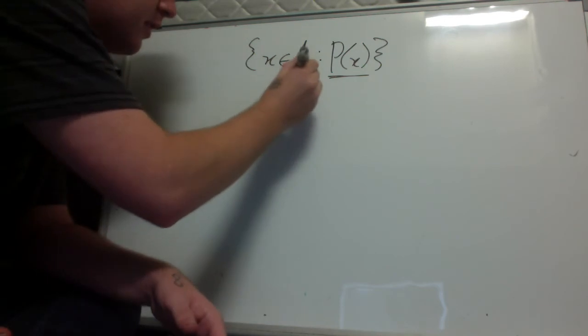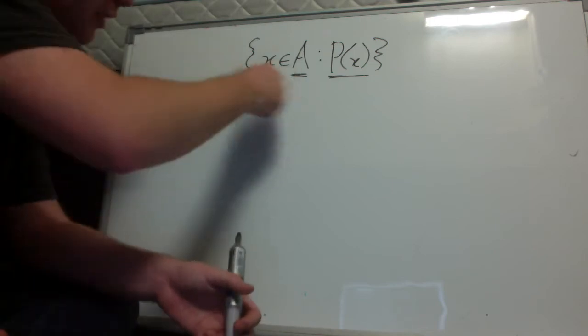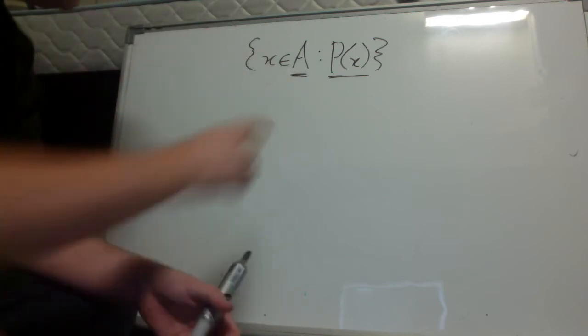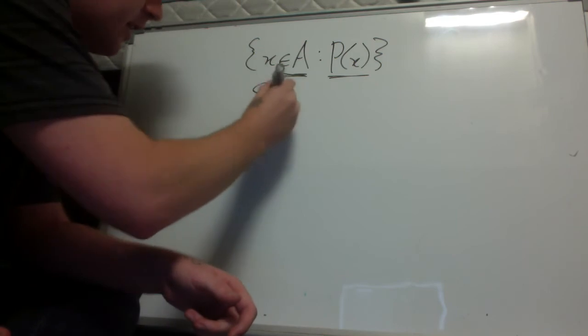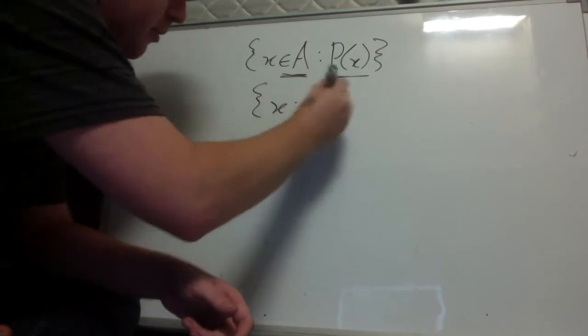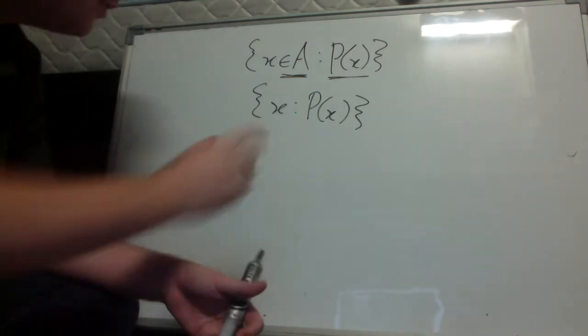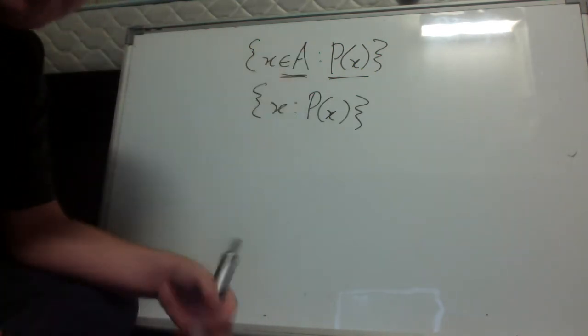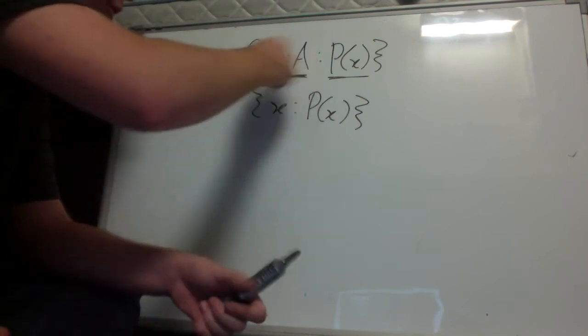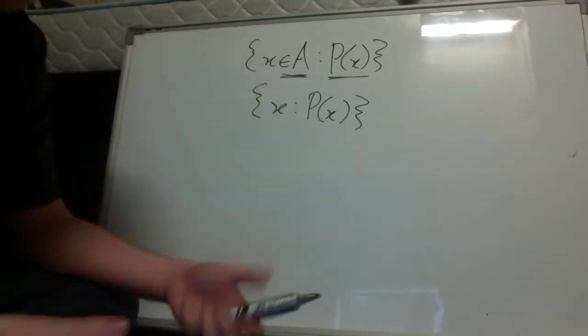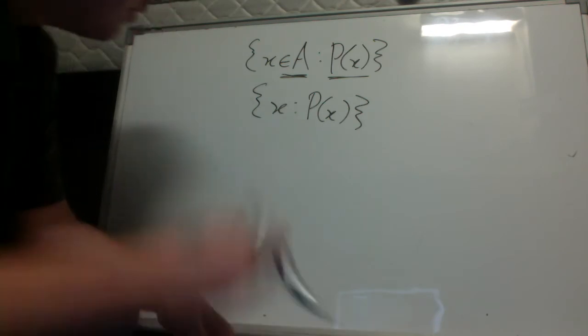a is generally speaking implicit. So a lot of the time you won't actually see the element a written. You'll just see something like x such that p of x. This is fine when a is implied, but you have to know that the a actually exists. Otherwise you run into what's called Russell's paradox.